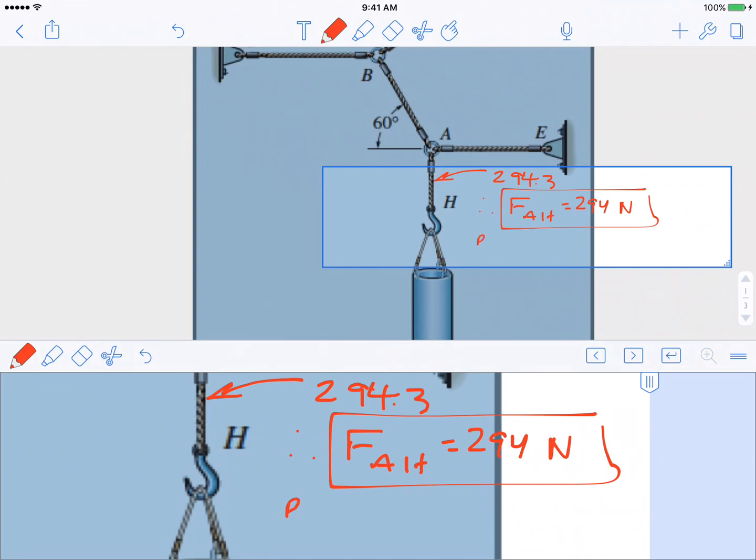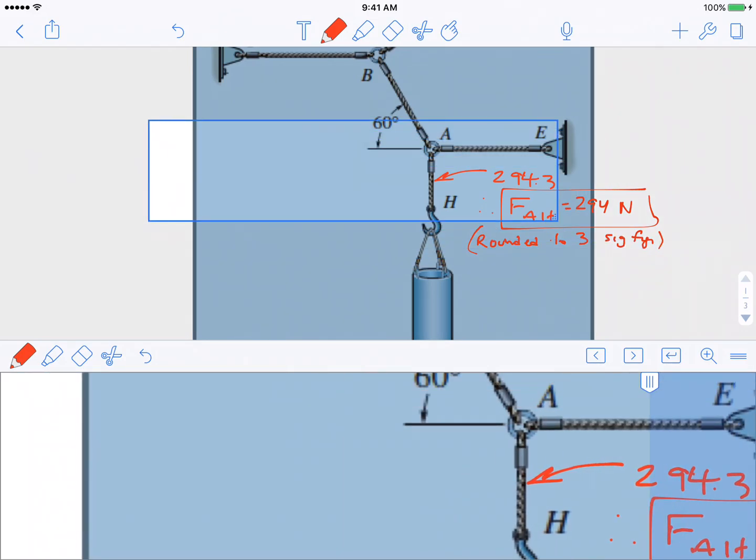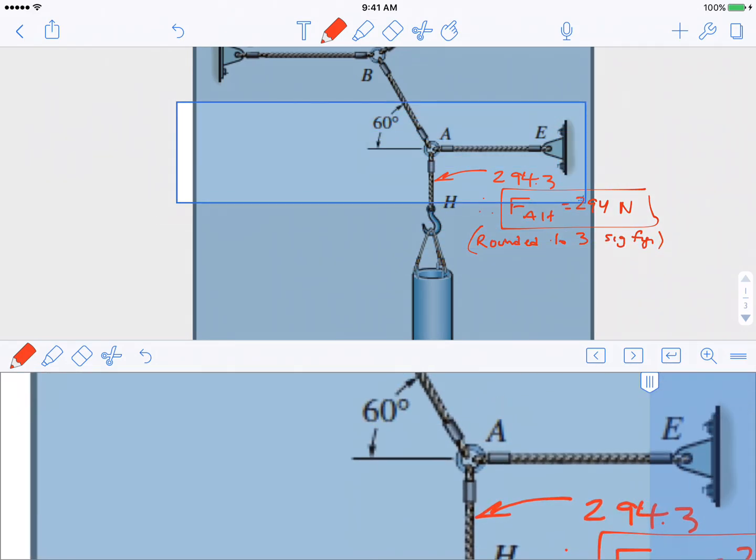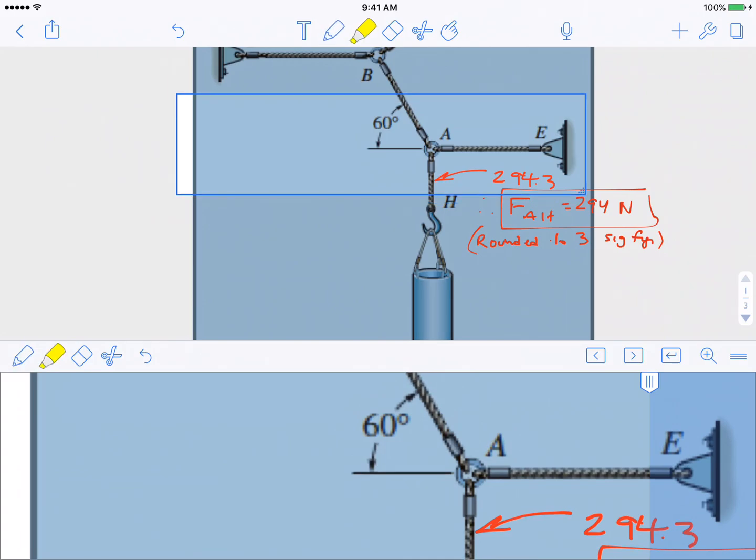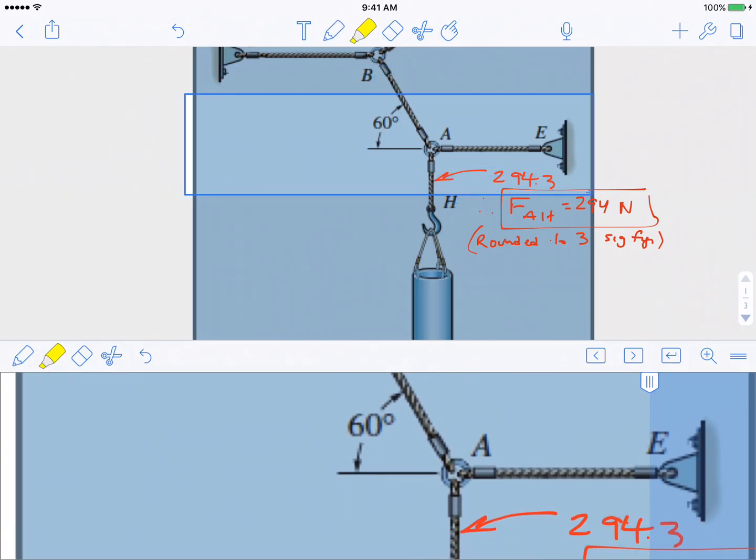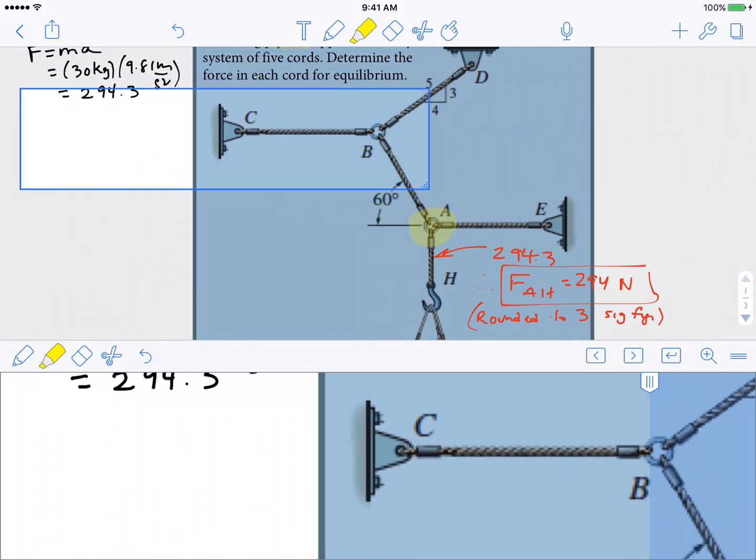Notice I rounded to three sig figs. That's our standard par for the course. So let's think about what to do next. I think it would make a lot of sense for us to do a free body diagram of A. Why A? Because we know FAH, and it's really a good idea to start from things that you know. So let's go ahead and do that over here.